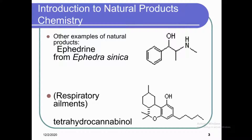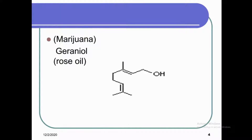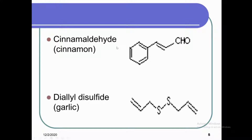Bioactive means they have medicinal potential and can be used as medicinal agents. Next is geraniol — commonly found in marijuana or known by its chemistry name geraniol. Since its name ends in '-ol,' it is an alcohol, and it contains an OH group, two double bonds, and is called rose oil, as this compound is present in rose oil. Next is cinnamaldehyde, found in cinnamon, commonly used in Asian countries. Finally, diallyl disulfide is a naturally occurring compound present in garlic.